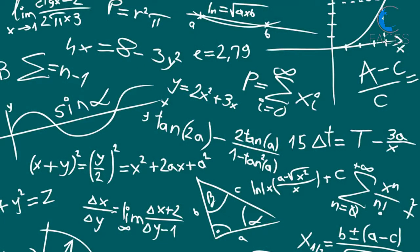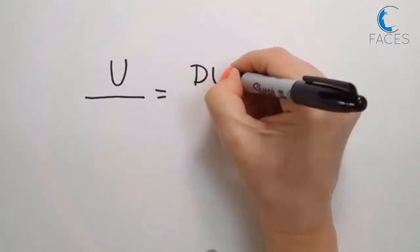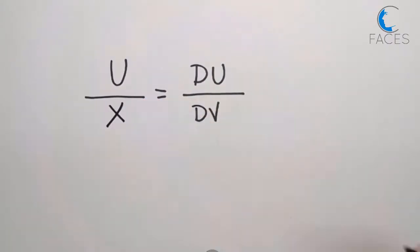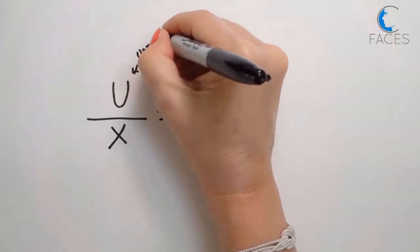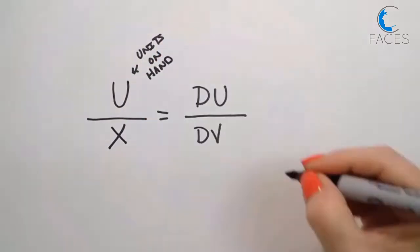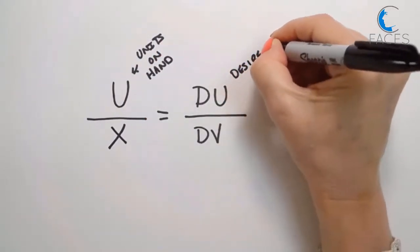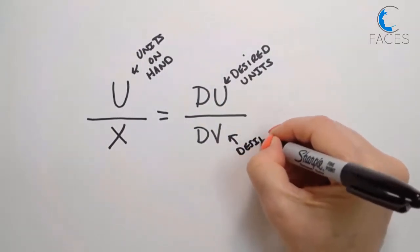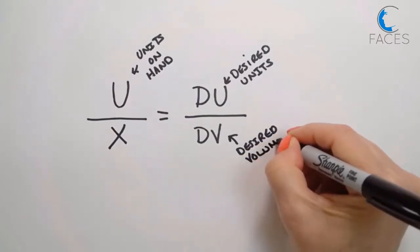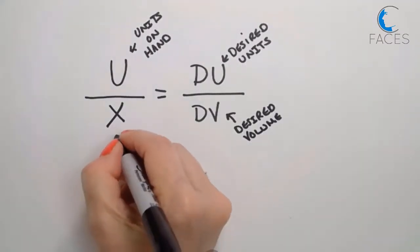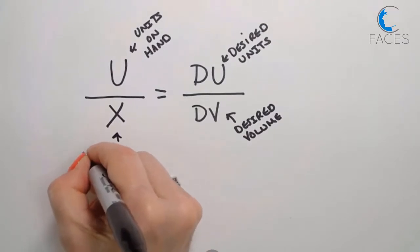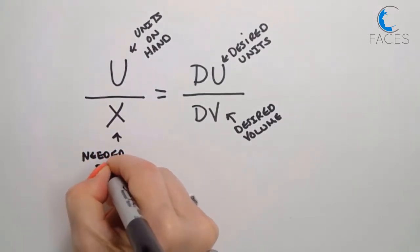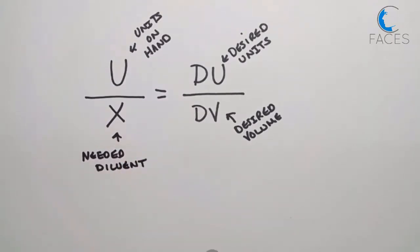There's a tiny bit of math involved, but it's not complex, and I'll show it to you here. This is the equation. U is the number of units you have on hand. DU is the desired number of units you'd like to end up with in the DV, which is your desired volume. And X is what we solve for — this is the volume of diluent you'll add to the full bottle in order to achieve your desired yield, or the DV, which is your desired volume.